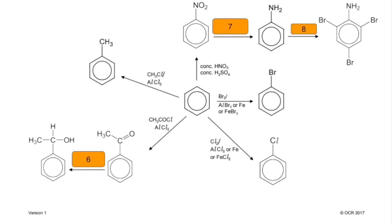Whatever alkyl group you want to put on the benzene ring, use the relevant chloroalkane containing that alkyl group. Number six: reducing the carbonyl group in the acyl group to an alcohol — that's an aliphatic reaction using NaBH4. Number seven: reduction of nitrobenzene to phenylamine — the reducing agent is a mixture of tin and concentrated hydrochloric acid. Number eight: phenylamine to the tri-substituted 2,4,6-tribromophenylamine — react it with bromine.